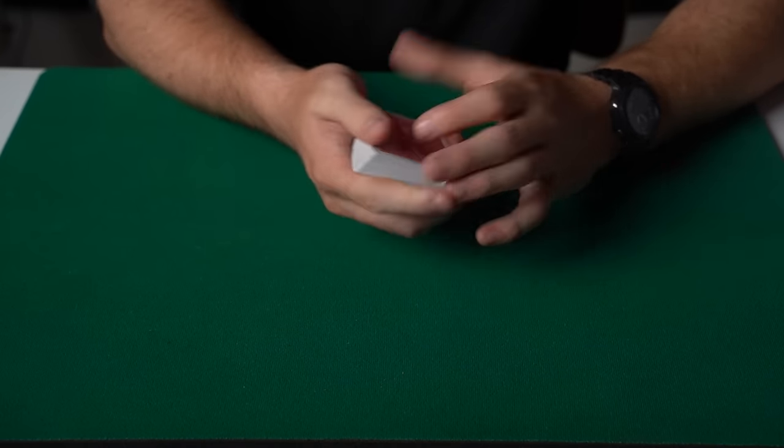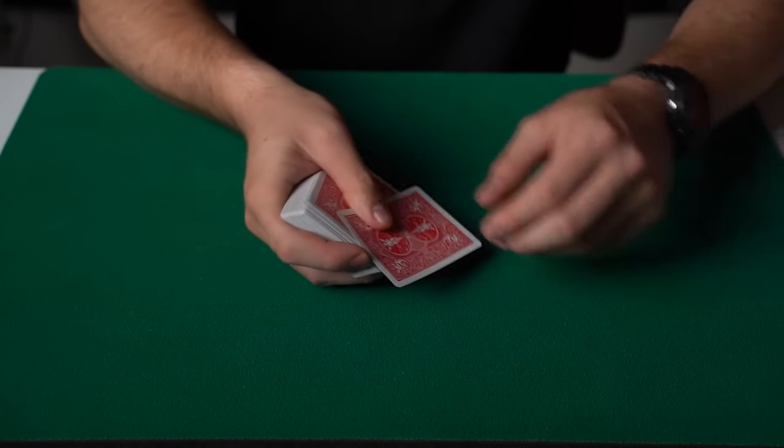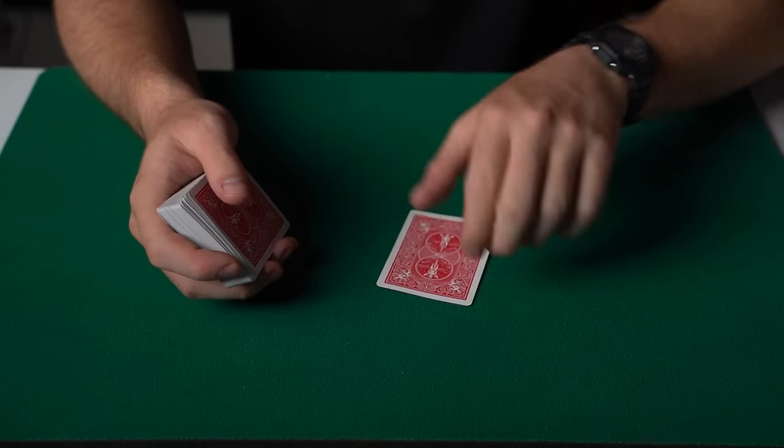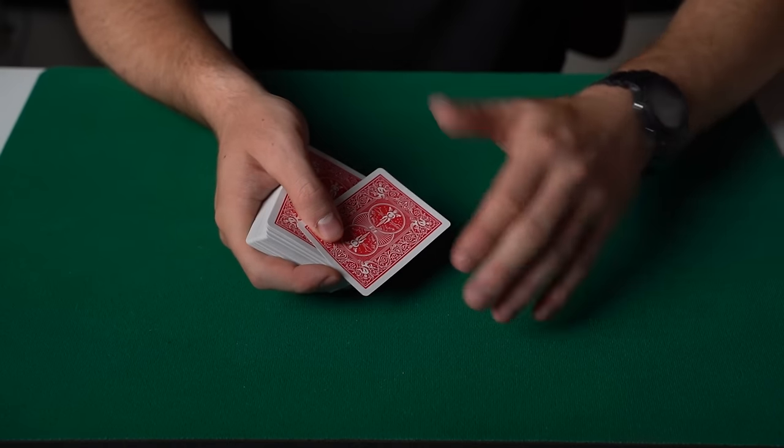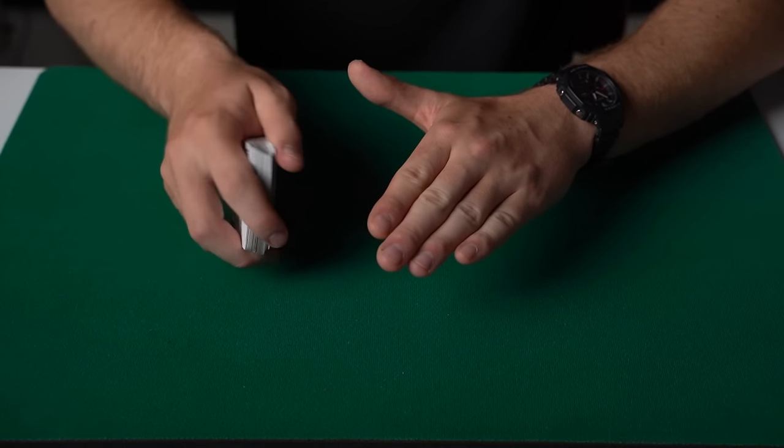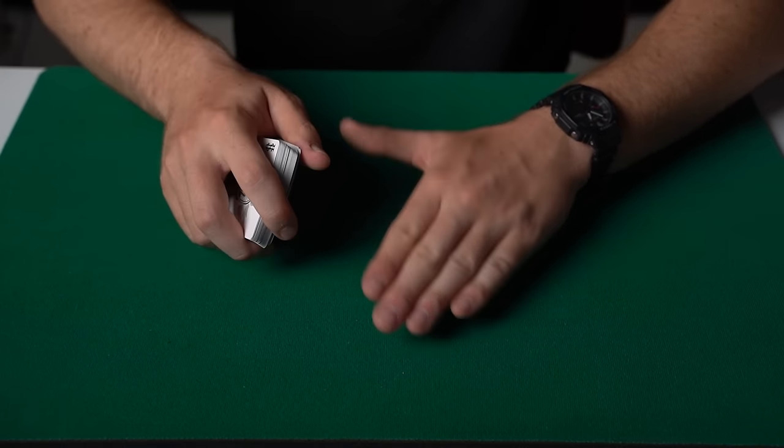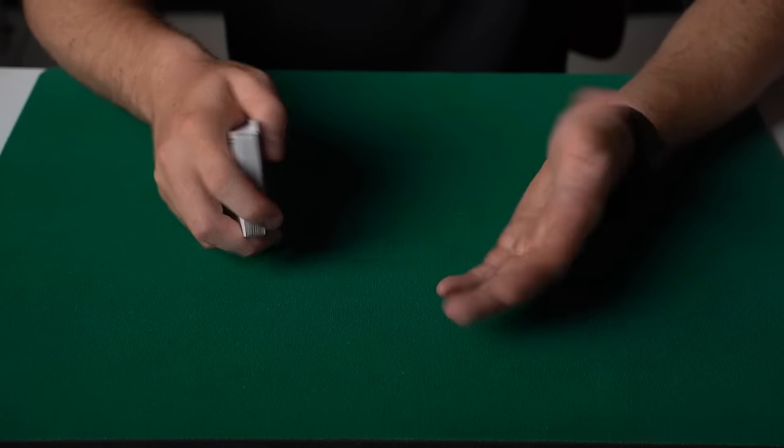So there are a couple of subtleties that you want to also include to make this more convincing. The first is you want to do a fake rub at the beginning, and the card doesn't go through. The second thing you want to do is as your hand comes over and you pull the card flush, you want to turn your wrist here. Turning your wrist just makes this whole illusion look a little bit more visual and impossible.